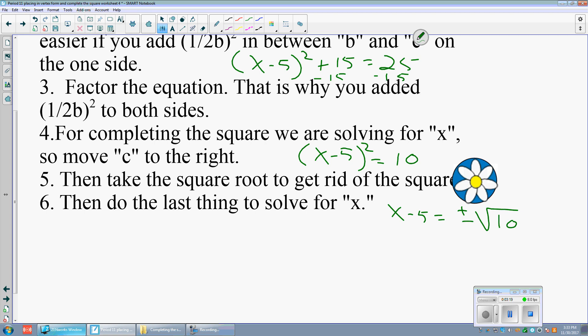The last thing we have to do is solve for x. That means get x alone, just like we have since third grade. x equals 5 plus or minus the square root of 10. Those are the steps. Now, let's try to do a problem all together.